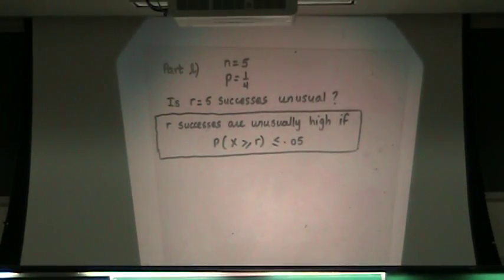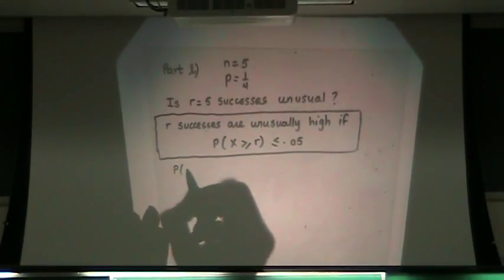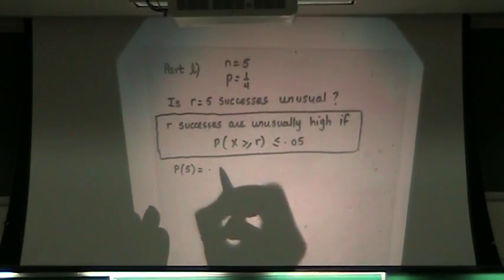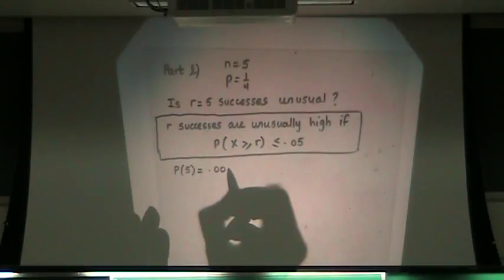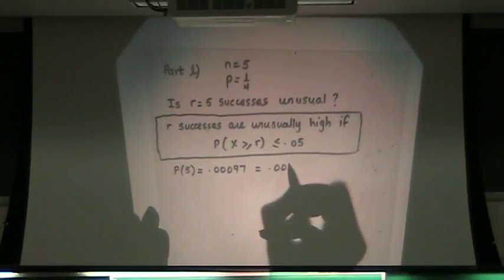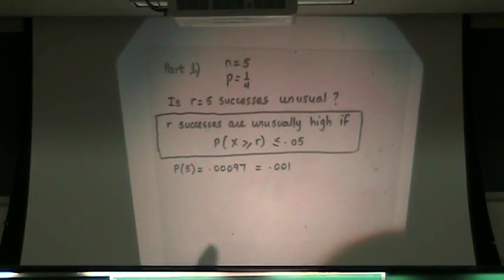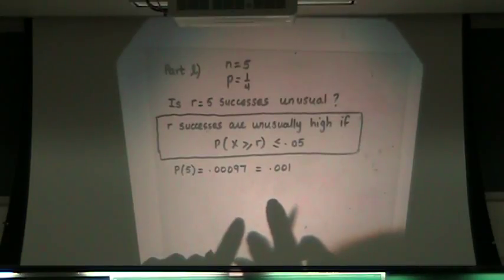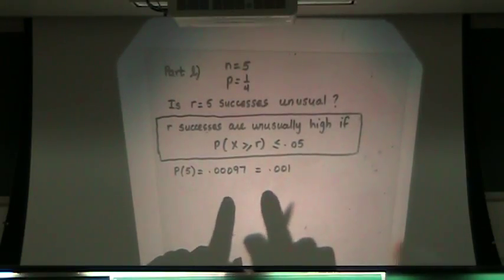We had found that the probability of five was 0.00097, which we said let's just call that 0.001. Can you check that number, please? Is that correct?